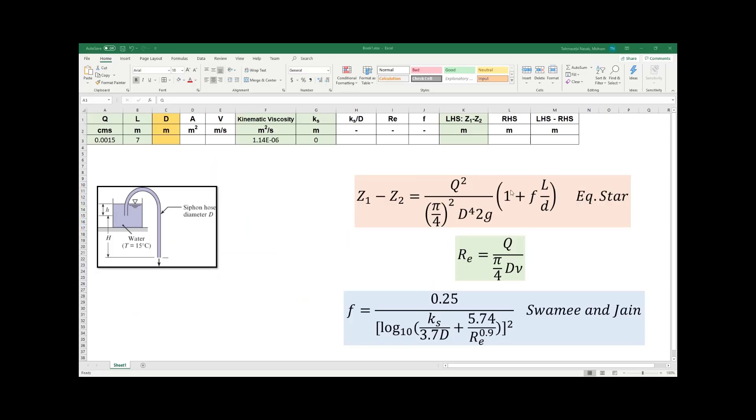I have written all the equations that I derived in previous slides. This was the star equation in the orange box, the Reynolds number is in the green box, and the Swamy and Jain equation to find F is in the blue box.